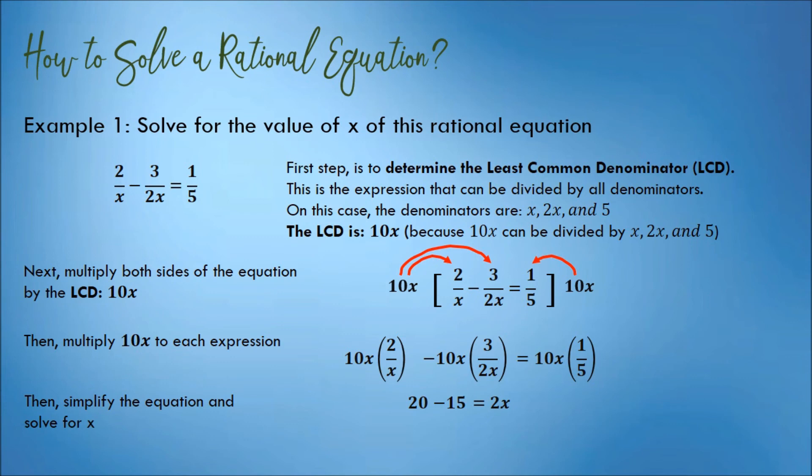That is, 20 minus 15 is equal to 2x. 20 minus 15 is 5 equals 2x. Divide both sides by 2.